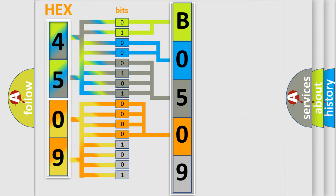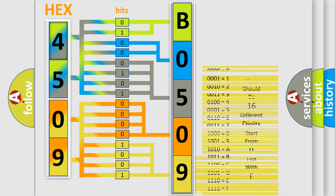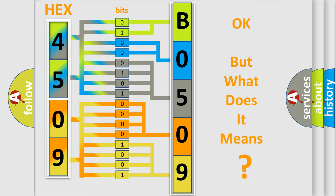A single byte conceals 256 possible combinations. We now know in what way the diagnostic tool translates the received information into a more comprehensible format. The number itself does not make sense to us if we cannot assign information about what it actually expresses.